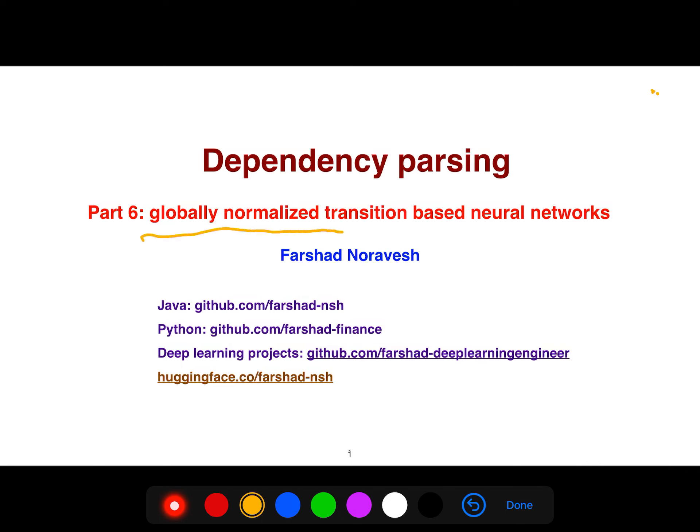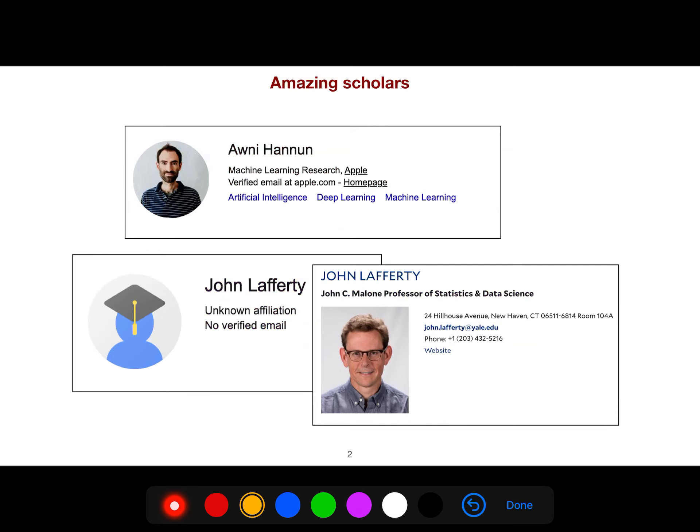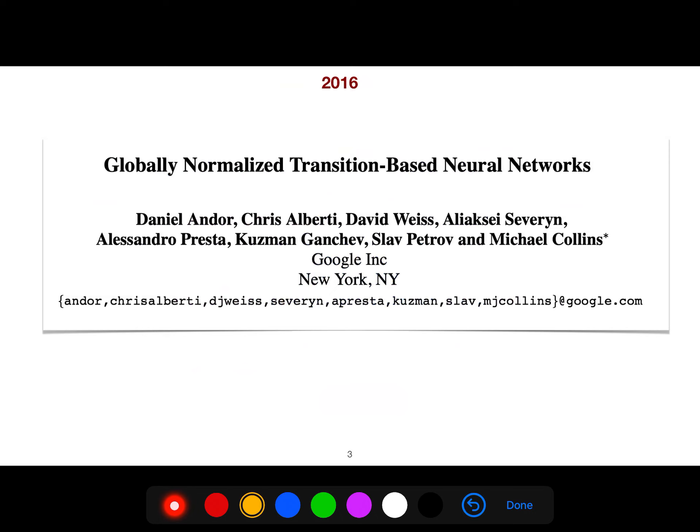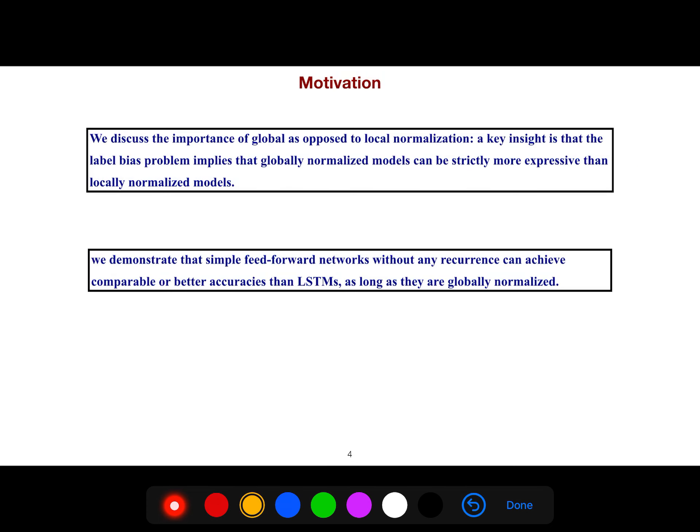These are amazing scholars. The paper that I'm going to explain is globally normalized transition based neural networks.